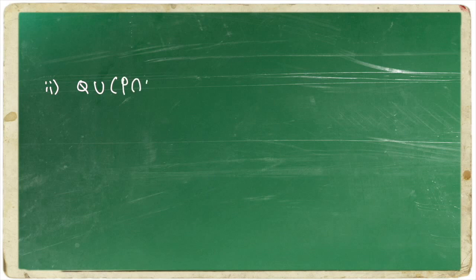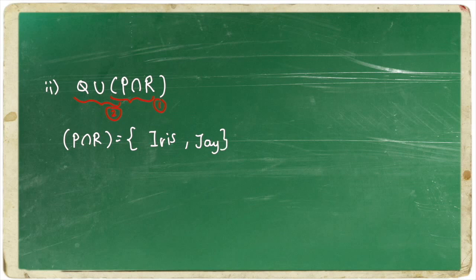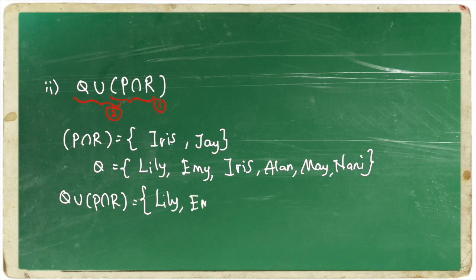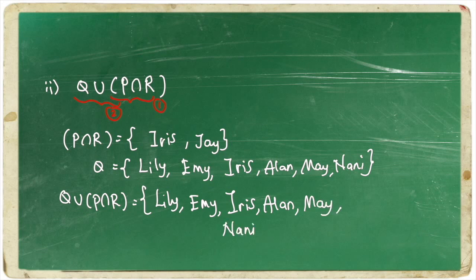Now, let's have a look at the second question. Remember, we need to solve the one in the bracket first and then whatever operation that comes later. The first operation is P intersect R. We know that intersection is whatever element that are the same. So, we have Iris and Jay. And then Q, we have Lily, Amy, Iris, Alan, May and Nani. So, the answer for this question is Lily, Amy, Iris, Alan, May, Nani and Jay.